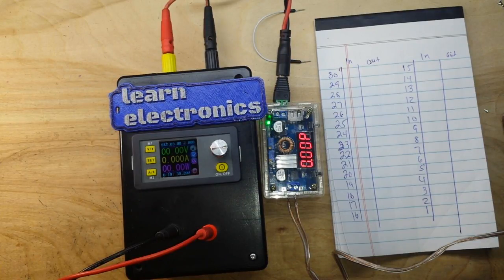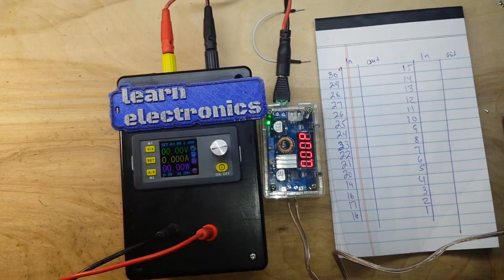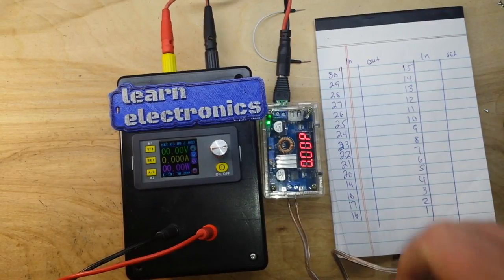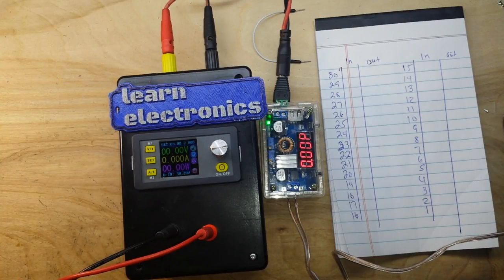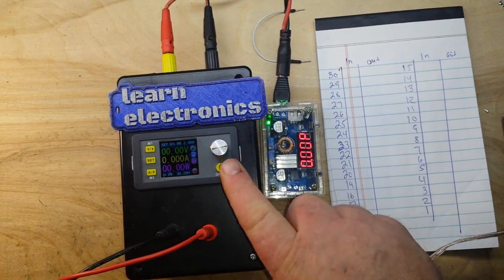Hey what's happening guys, we are back again today with the Rui Deng DPS 5005 buck converter desktop power supply from our friends at Banggood and a piece of paper because today we're going to get on to the unglamorous side of electrical engineering: power supply characterization. We're going to check the efficiency and find out just how efficient this power supply is.